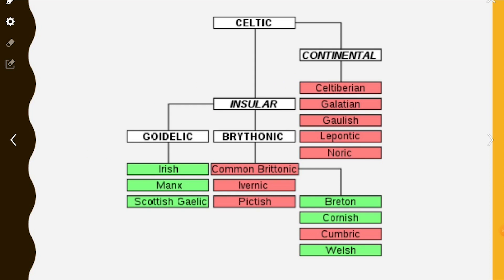For example, here we have Celtic, divided into Continental and Insular branches. Continental includes languages such as Celtiberian, Galatian, Gaulish, Lepontic, and Noric. This is a division of language families.